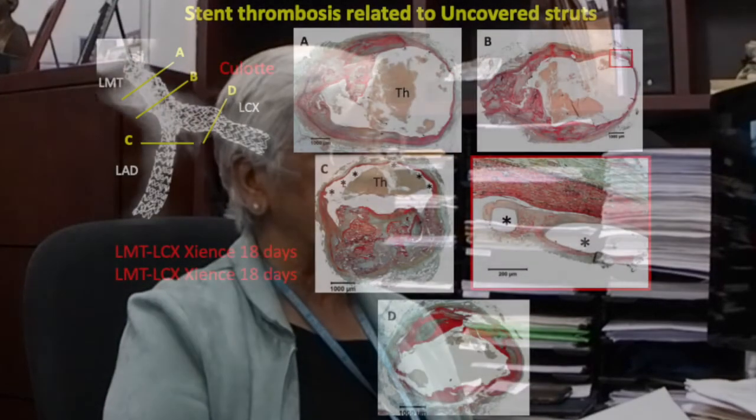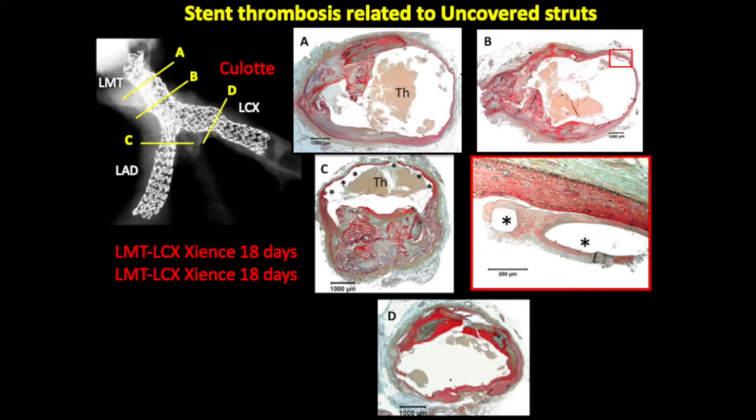Here is another example of uncovered struts that may also lead to stent thrombosis. The asterisks point to all the uncovered struts. This occurred 18 days after implantation in the left main, circumflex, and left anterior descending artery, and you can see the thrombus formation.